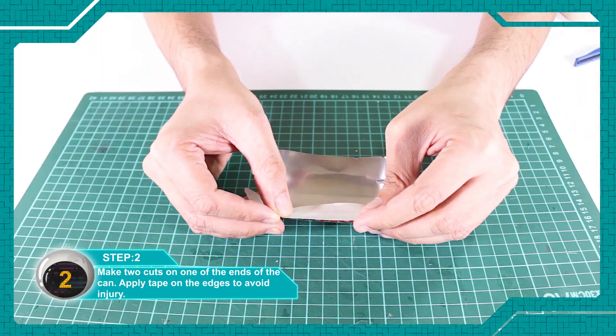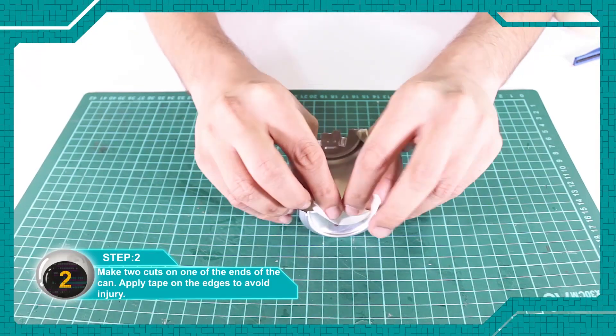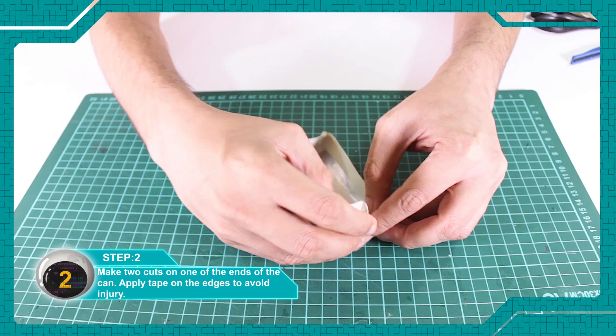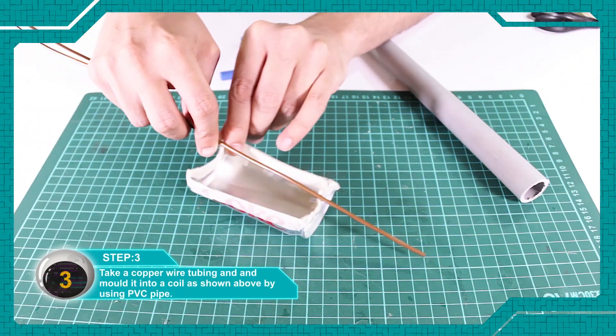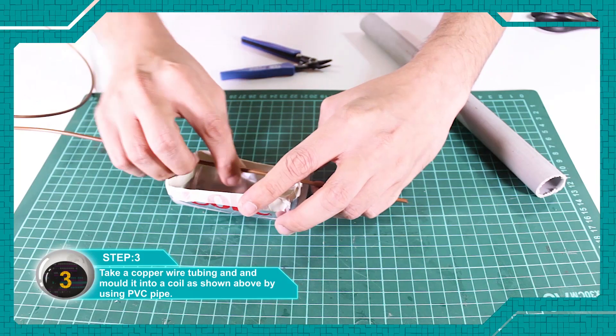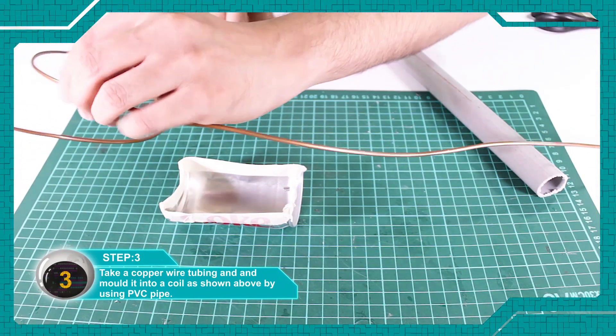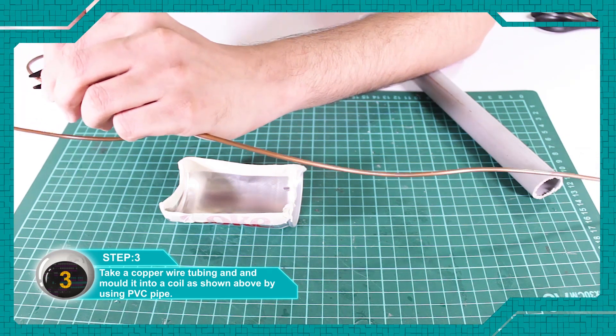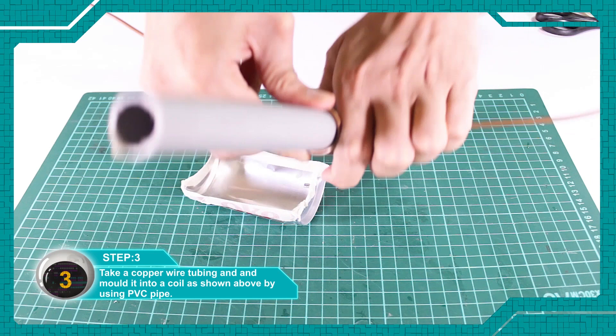Apply tape on the corners so you don't get hurt. Take a copper wire tubing and bend it into a coil shape as shown above.